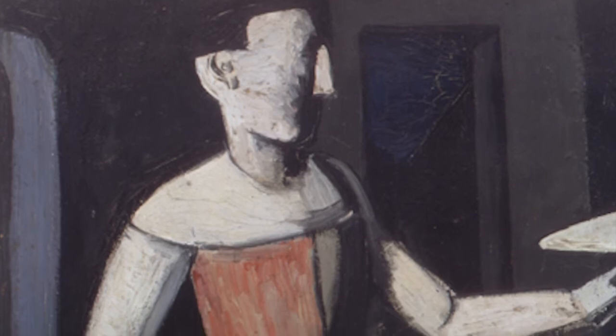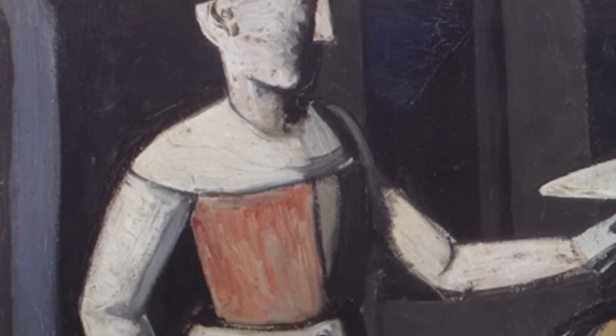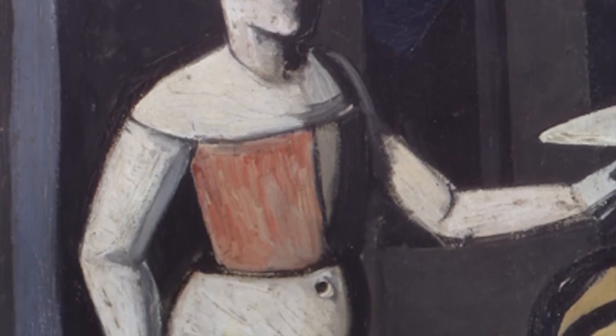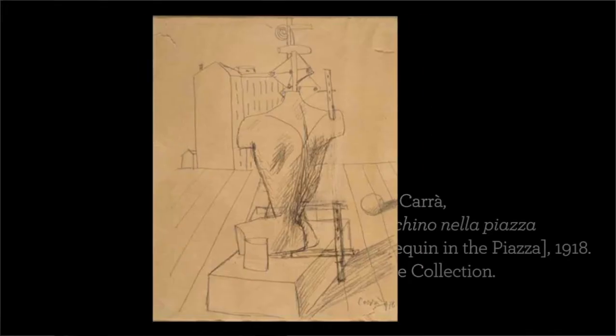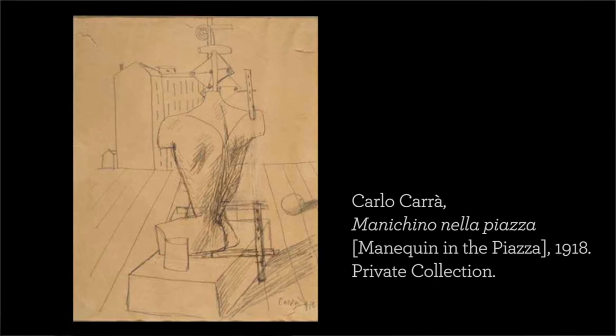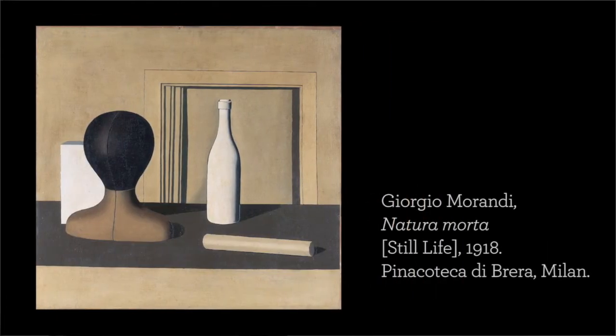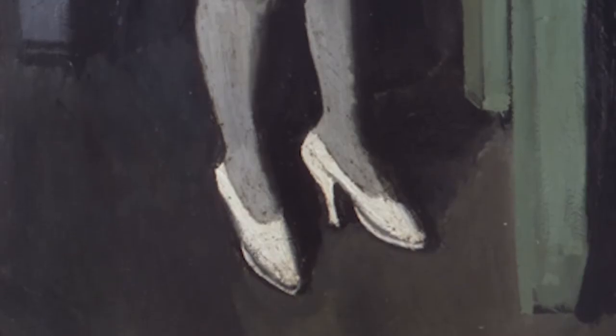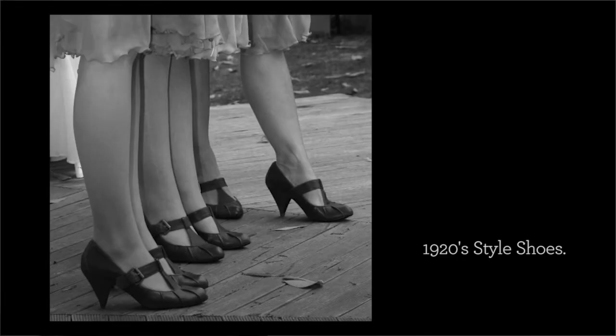The painting depicts a mannequin-like figure whose gender remains ambiguous. The mannequin looks very different from the ones that we can see in Giorgio De Chirico's, Carlo Carrà's, and even Giorgio Morandi's paintings. Its body reminds us of a tailor mannequin, and even if the torso has no breasts, it looks more like a female body — it wears high heels and long grey socks, typical of early 1920s women's outfits.